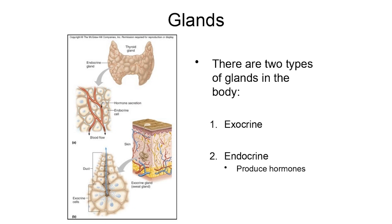With endocrine organs it's a little bit different. Here's the thyroid gland — a butterfly-shaped endocrine organ that sits in your neck and produces hormones. It's an endocrine gland because it doesn't have a duct. If you look at its structure, there's no tube, no duct coming off of it anywhere. What endocrine organs do instead is — if you look at them microscopically — they're very vascular. Here's an artist's representation: we've got the cells that make up the thyroid and an extensive network of blood vessels running through them.